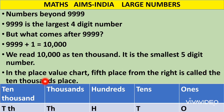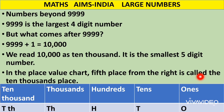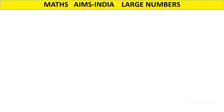In previous classes, you learnt only till thousands, which is the place value for four digit numbers. But now we have 10,000 which is a five digit number, so the fifth digit from the right has the place value of ten thousand. We have a new member in the place value chart: ones, tens, hundreds, thousands, and now ten thousands, which comes on the fifth place from the right.